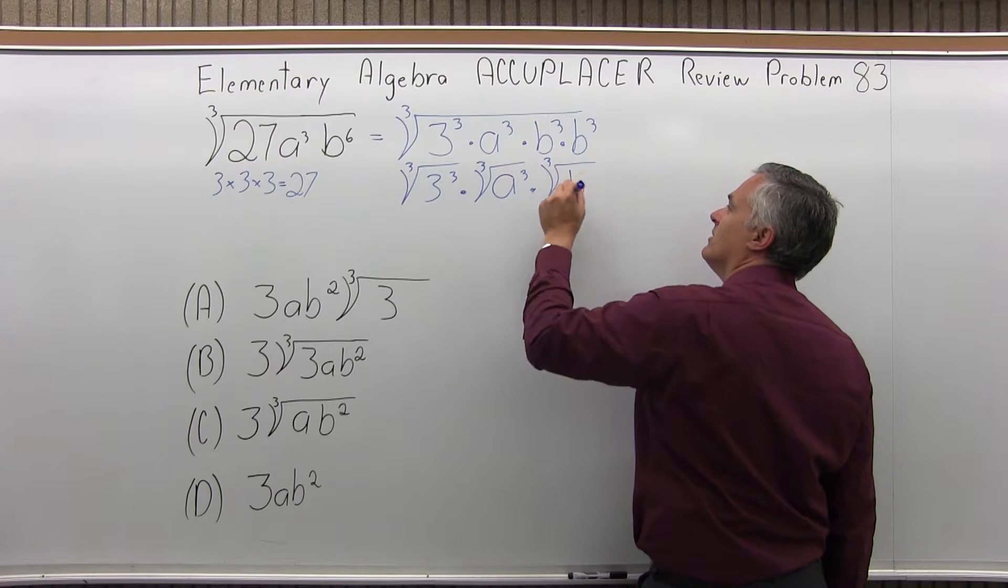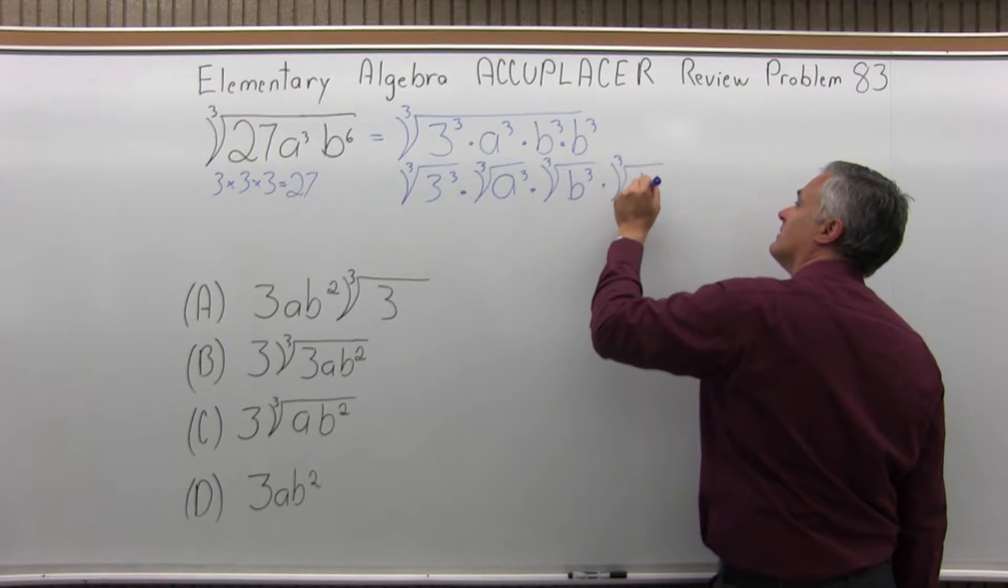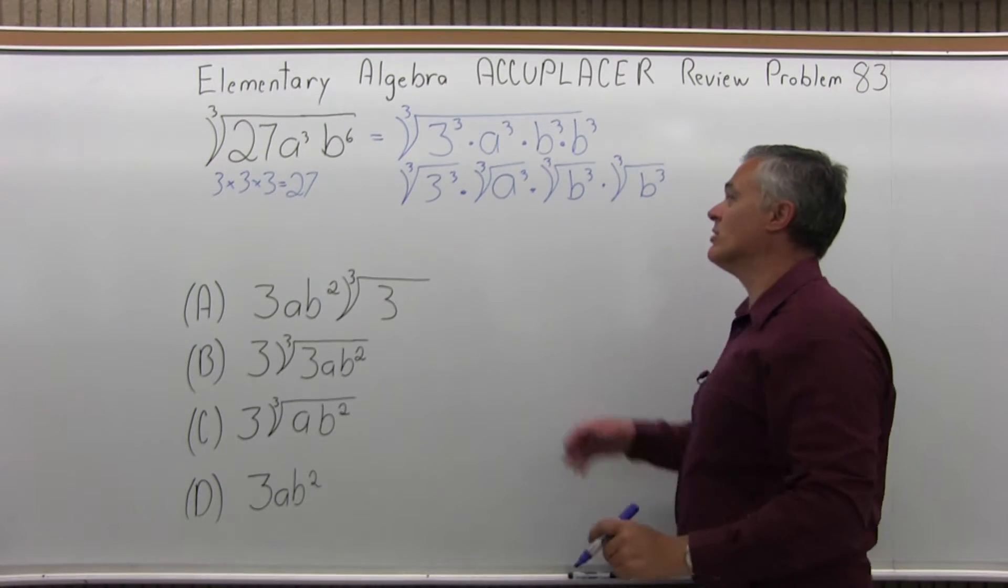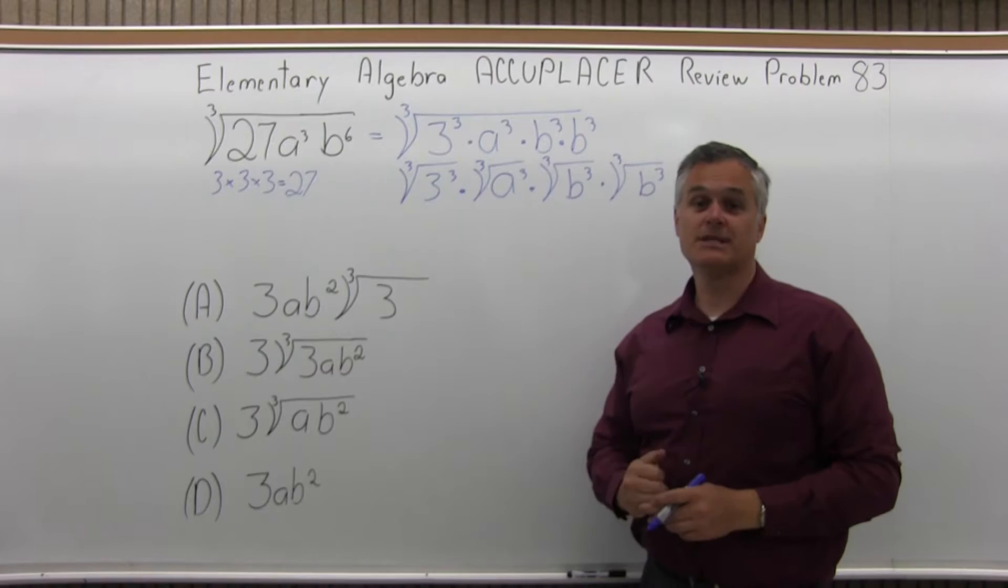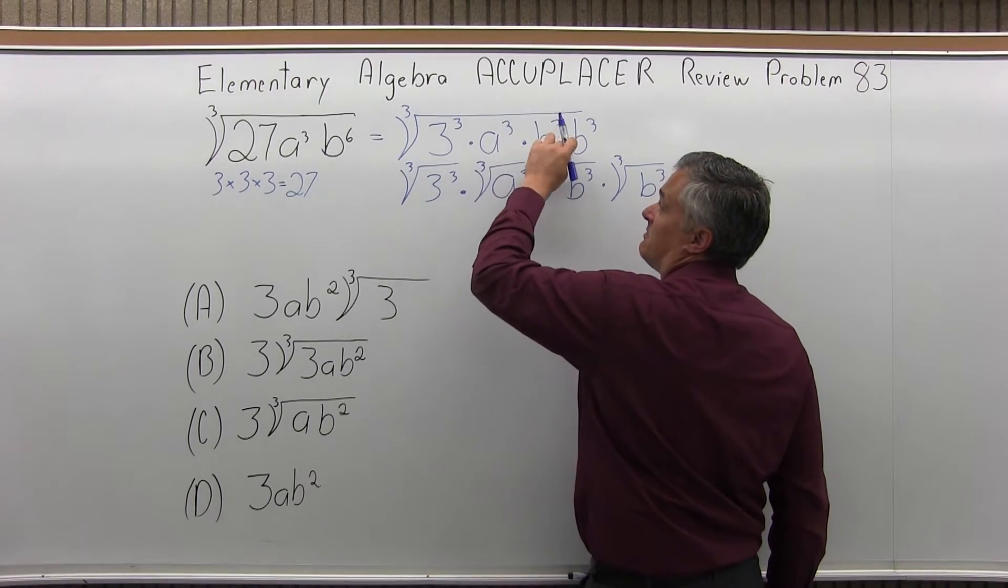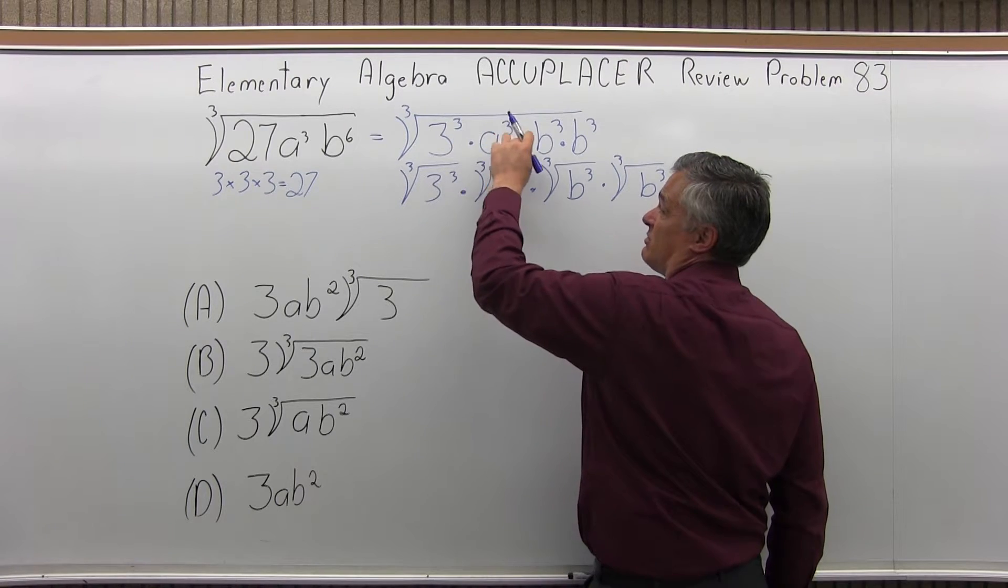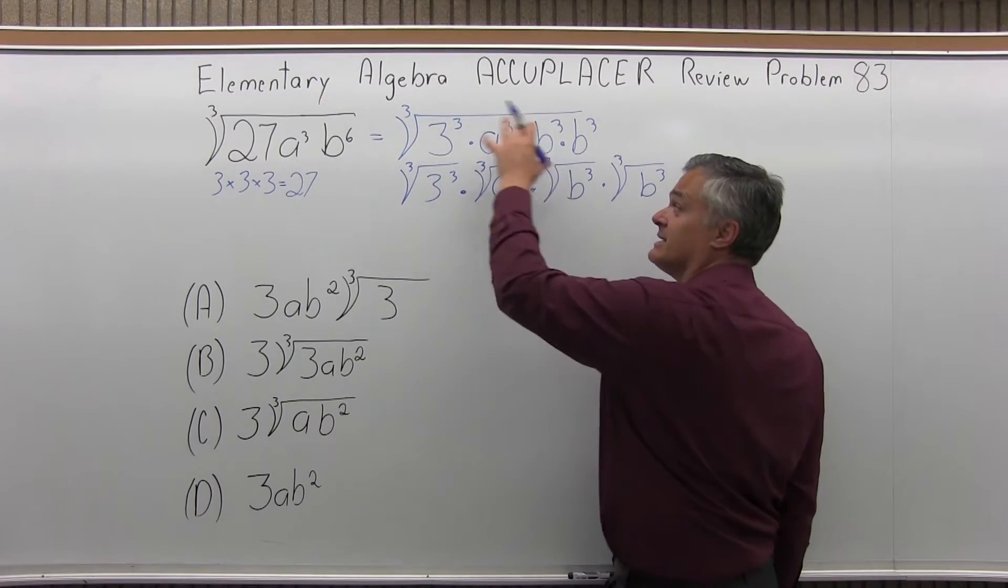Instead of one big cube root, I can make many little cube roots and deal with them one piece at a time. The reason I can do this is because it's multiplied underneath the cube root. If it was a plus or a minus, I'd have to keep it as one big root. Then I couldn't split it up. But in this case, I can.